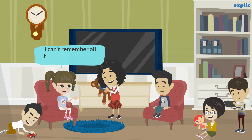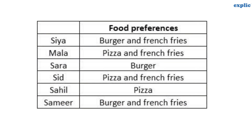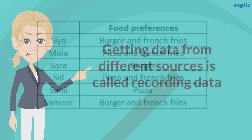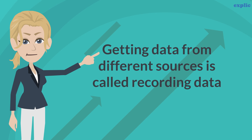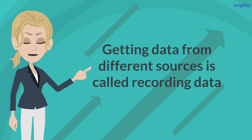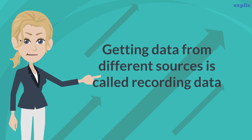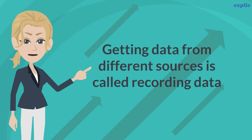I can't remember all these. Let me note it down. As we saw, Sia has listed out the food preference as per everyone's choice. Getting data from different sources is called recording data.